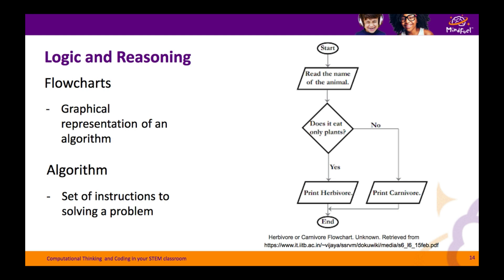As you look at this flowchart, there is an improvement that could be made. When testing a flowchart, regardless of what the input is, we should be reaching an output that makes sense. For example, if the input is a bear and we ask does it eat only plants, the answer is no — and the flowchart would print carnivore. However, that's not true; bears are actually omnivores. So we should have another decision or option present in this flowchart.